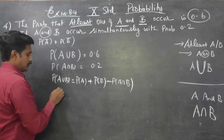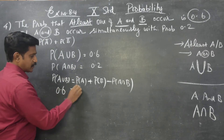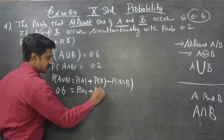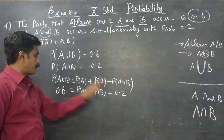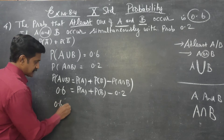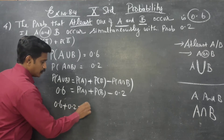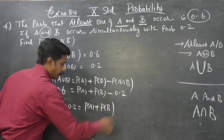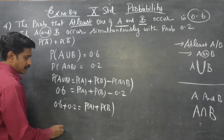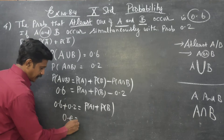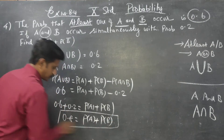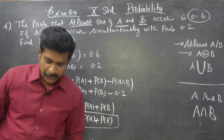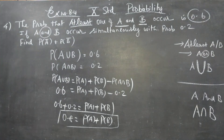What is probability of A union B? It is 0.6. And probability of A intersection B is 0.2. So, 0.6 plus 0.2 is equal to probability of A plus probability of B. I have reached the answer: probability of A plus probability of B equals 0.8.